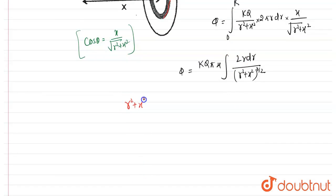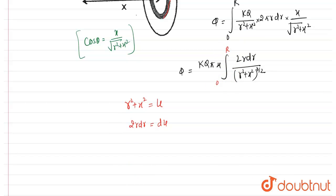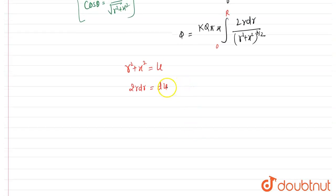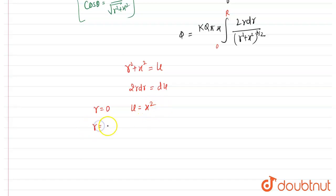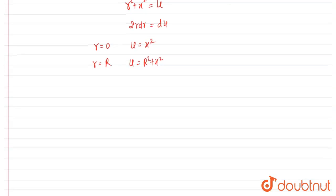Now we integrate this relation. Let us assume r² + x² equals u. Differentiating both sides, we get 2r dr equals du. The limits also change: when r equals 0, u equals x²; and when r equals capital R, u equals R² + x². That is our new limit.